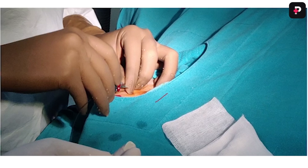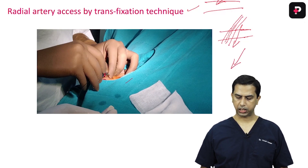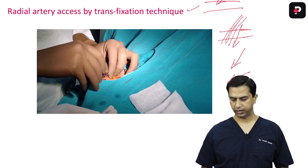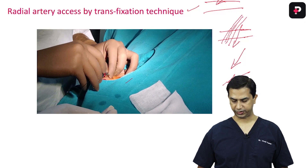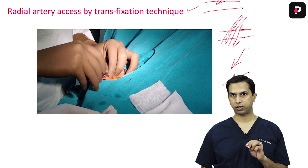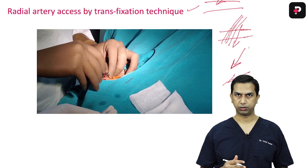I prefer to puncture the artery at a more obtuse angle of 60–70 degrees rather than going horizontal. When you go more vertical, the depth of tissue is less, so you traverse less tissue to reach the artery and can puncture directly at the pulsation point. If you go at an acute angle, you may miss the direction because you have to travel deeper.